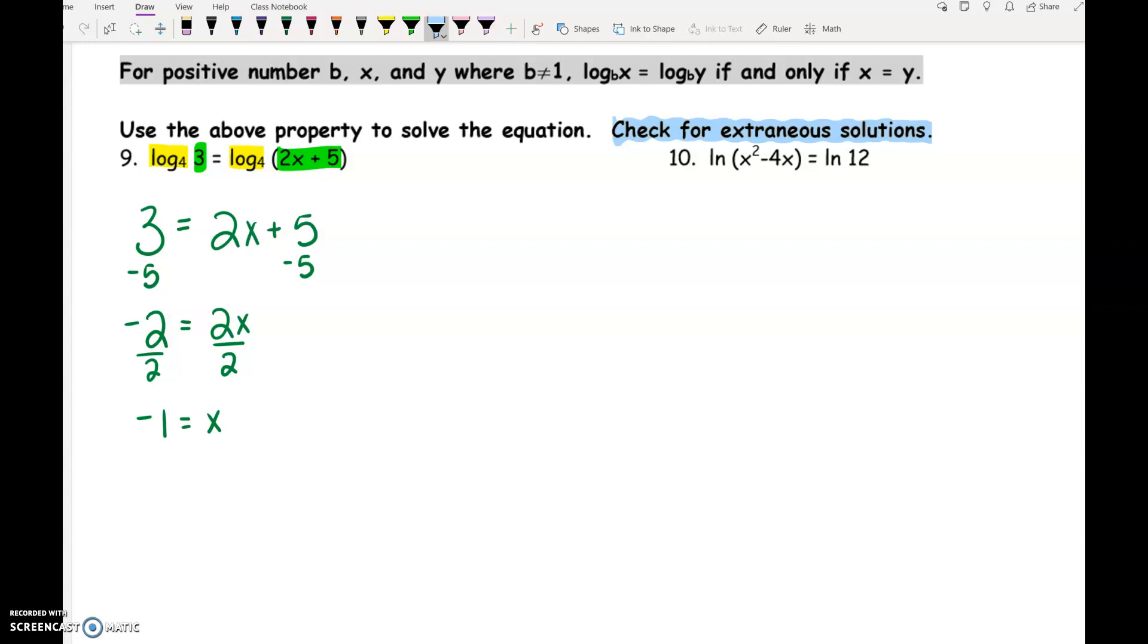So on the left side we don't have to worry because 3 can't be anything but 3. On the right side, think about if you plugged that negative 1 in right here. 2 times negative 1 is negative 2, negative 2 plus 5 is not negative, so we're good, we're fine.